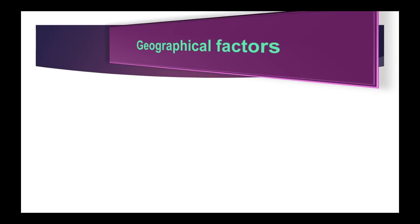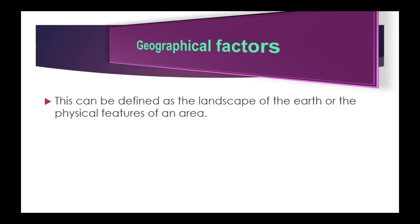Next we have geographical factors. This can be defined as the landscape of the earth or the physical features of an area. Physical distance between sender and receiver creates a need for forms of communication other than face-to-face. The type of terrain between the sender and receiver also has an impact. In the past, barriers such as rivers and mountains made physically carrying a message more difficult. These same geographical obstacles hinder communication today because they create problems when constructing communications infrastructures such as cable networks.